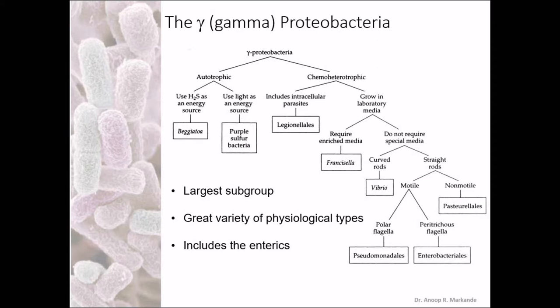Chemoheterotrophic bacteria include Legionella. If they are growing with common laboratory media, the example is Francisella. If they do not need special medium, that includes Vibrio, Pseudomonas, and other Enterobacteriaceae, and Pasteurella.